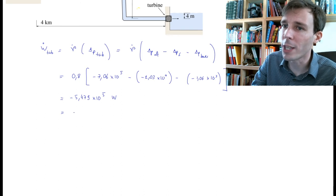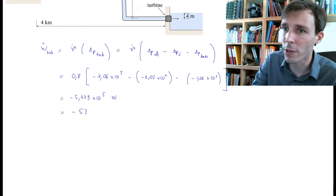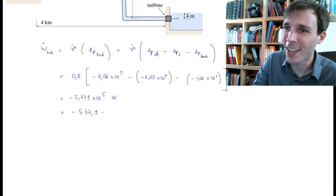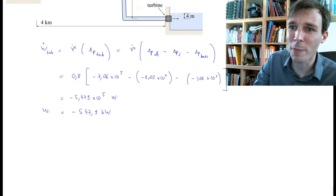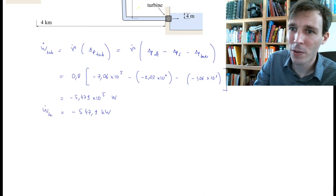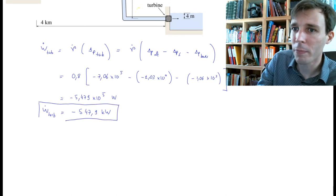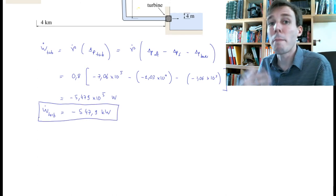Typically in engineering, we like to express this as kilowatts, megawatts, milliwatts, and so forth. So we re-express this as minus 547.9 kilowatts. This is the power made available to the turbine.